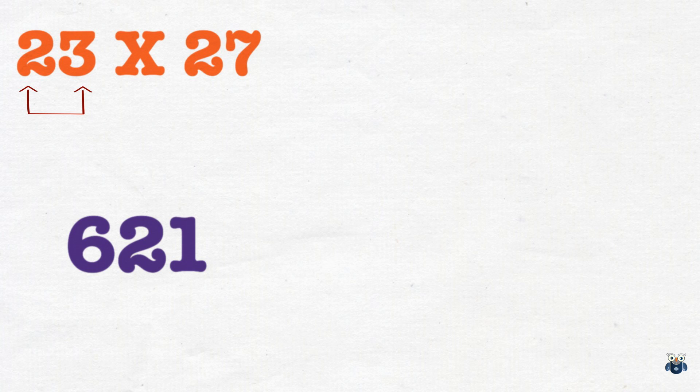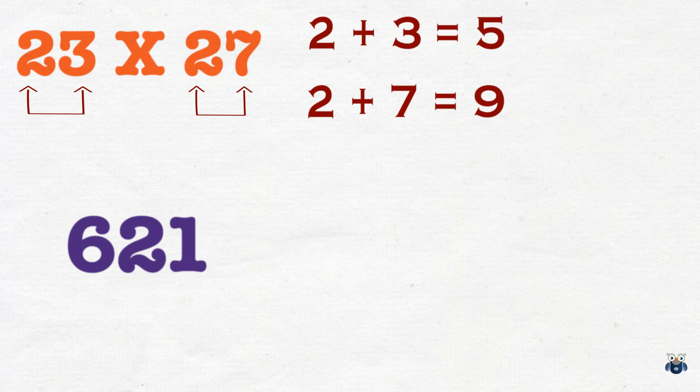Take the first number, which is 23. Add its digits. So, 2 plus 3 is equal to 5. Now, look at the next number, 27. Add its digits. 2 plus 7 is 9.